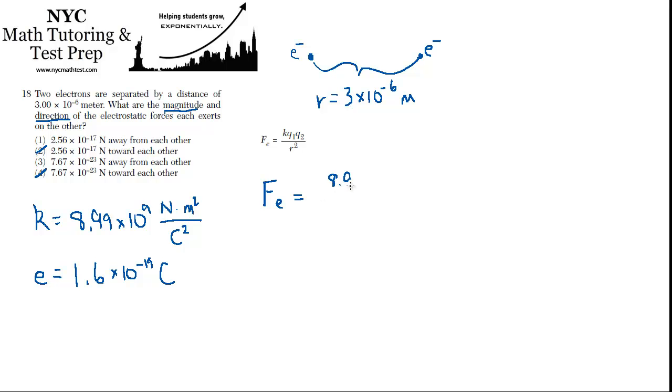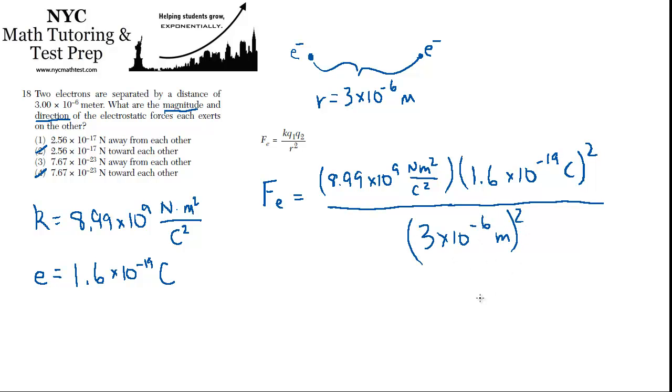So it's 8.99×10^9 newton·meters squared per coulomb squared - oh sorry, I forgot the charges in the numerator there. There's two of them and they're the same, so instead of writing this twice, I'm just going to write 1.6×10^-19 coulombs and square it. That's all in the numerator. And then the radius or distance between the two squared: 3×10^-6 meters, and that's being squared.